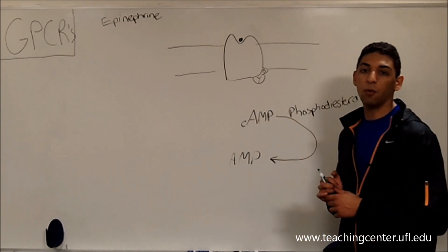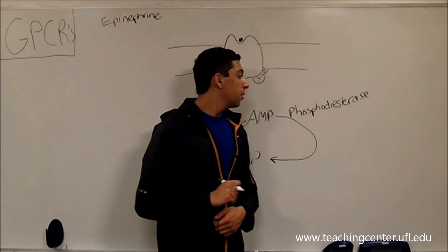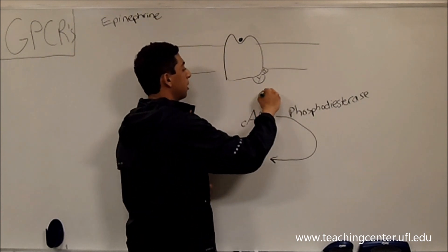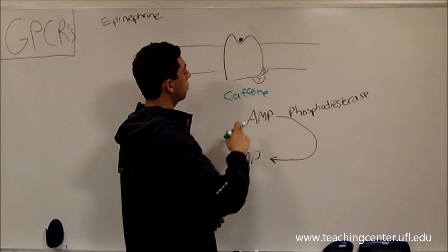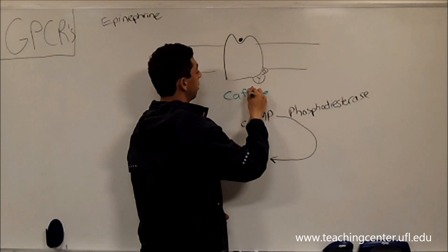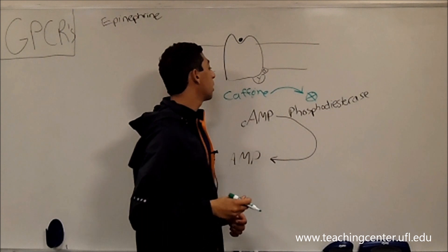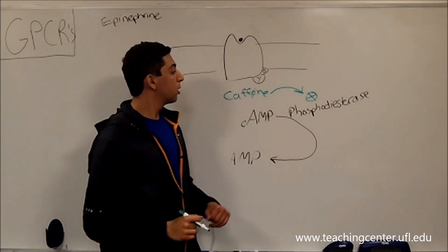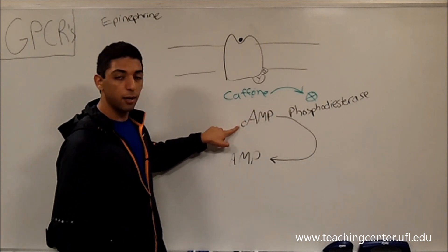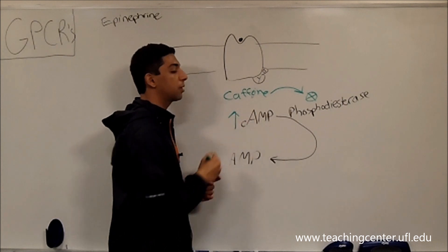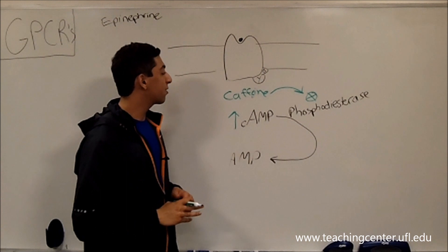When you drink coffee, tea, Red Bull, or whatever your energy drink of choice is, the caffeine actually inhibits phosphodiesterase. By inhibiting phosphodiesterase, caffeine forces your body to maintain really high levels of cyclic AMP, which is what gives you all that energy. That's a fun fact for you guys.